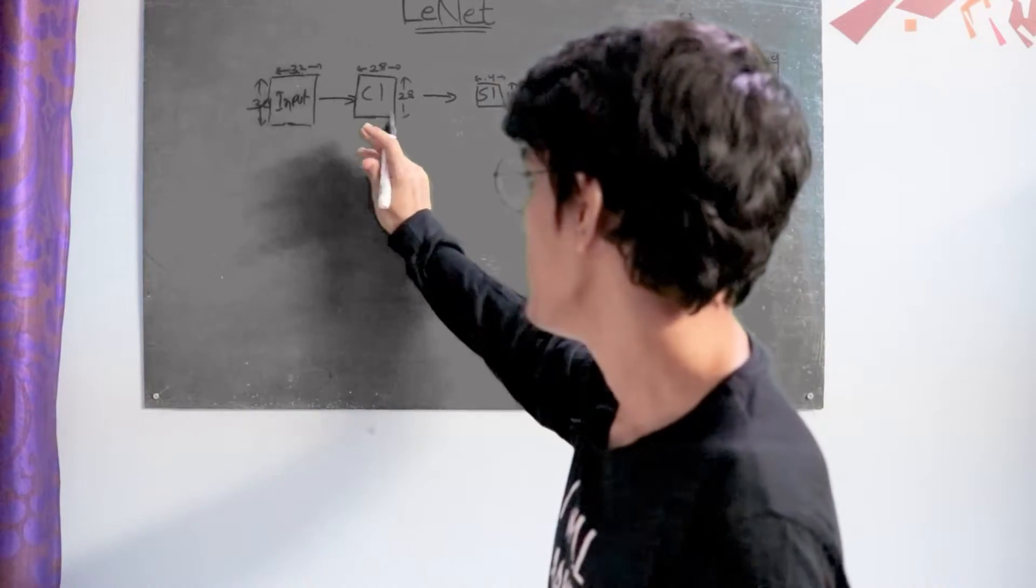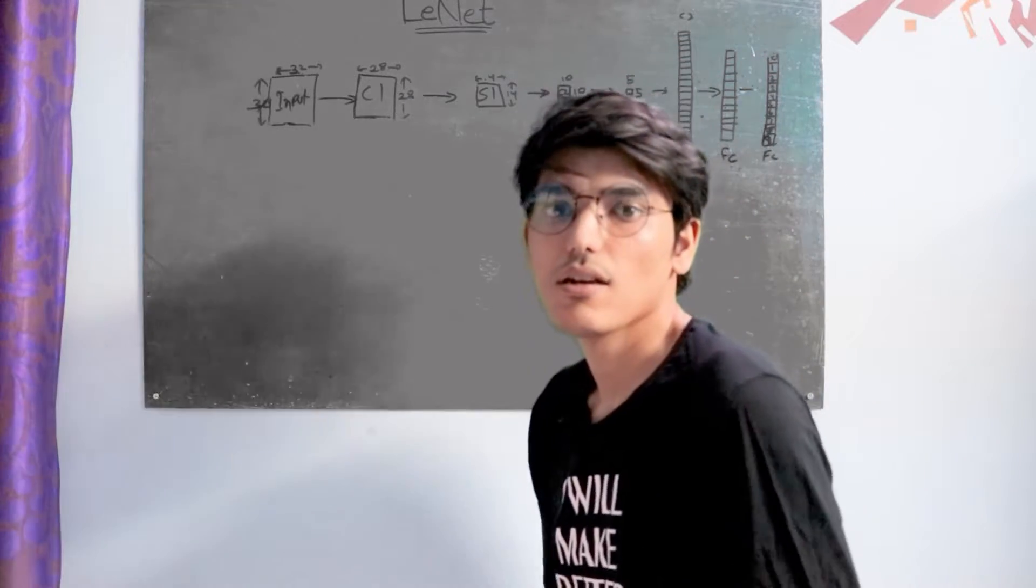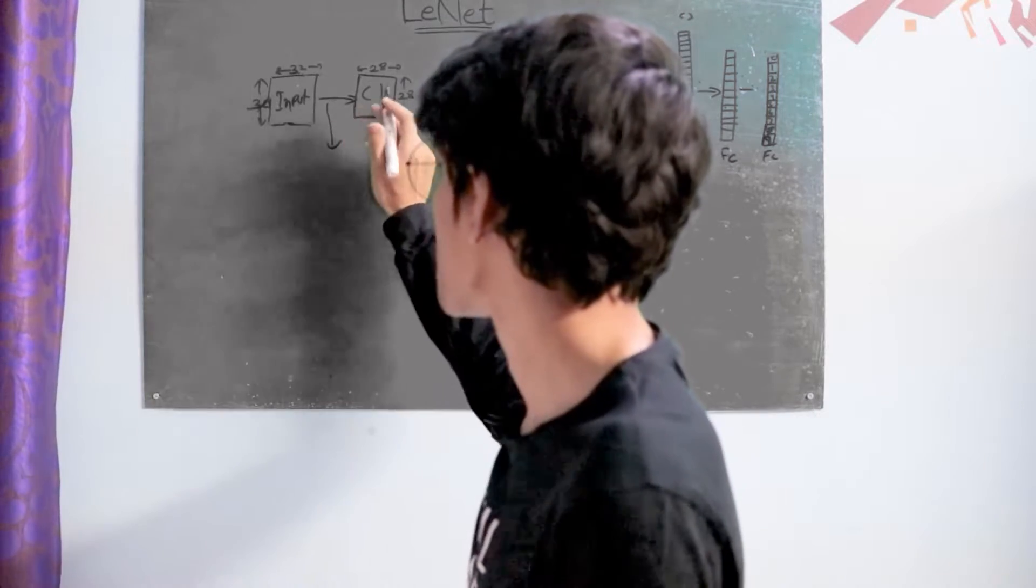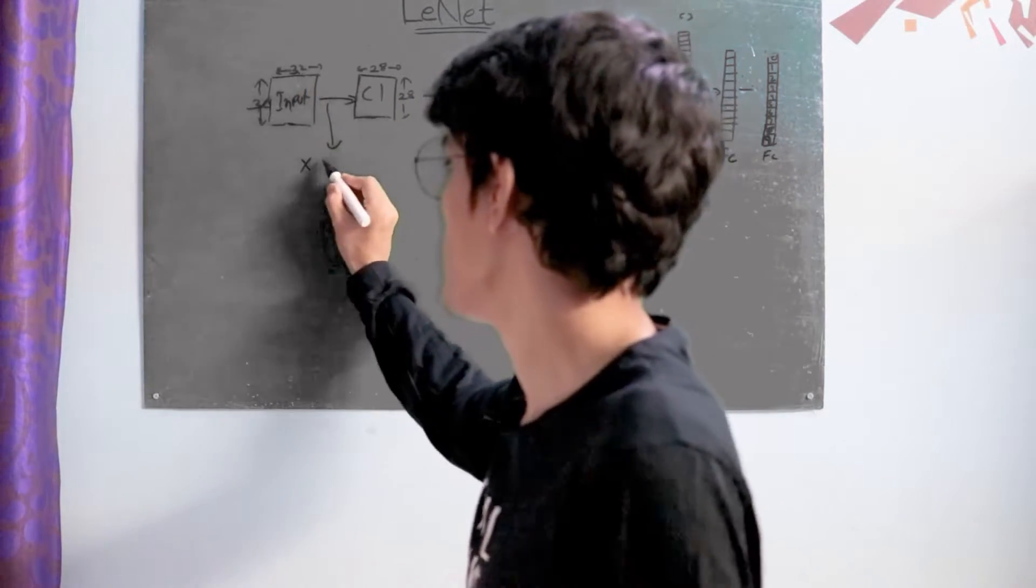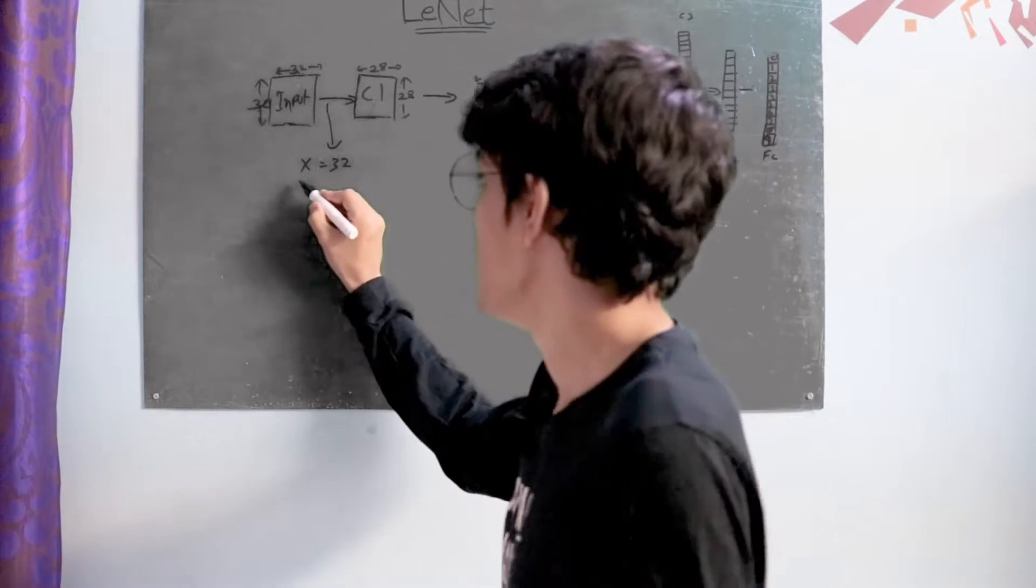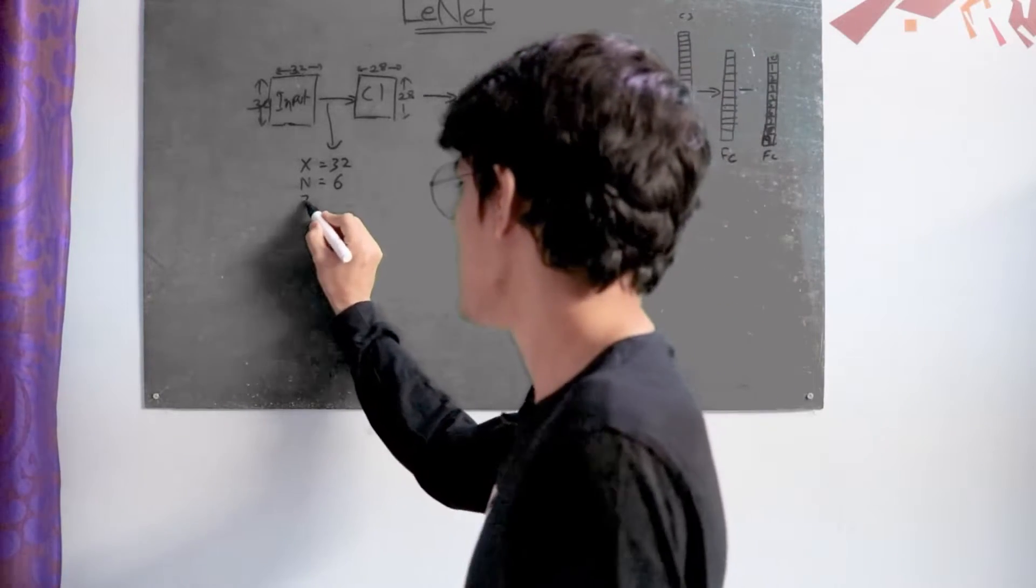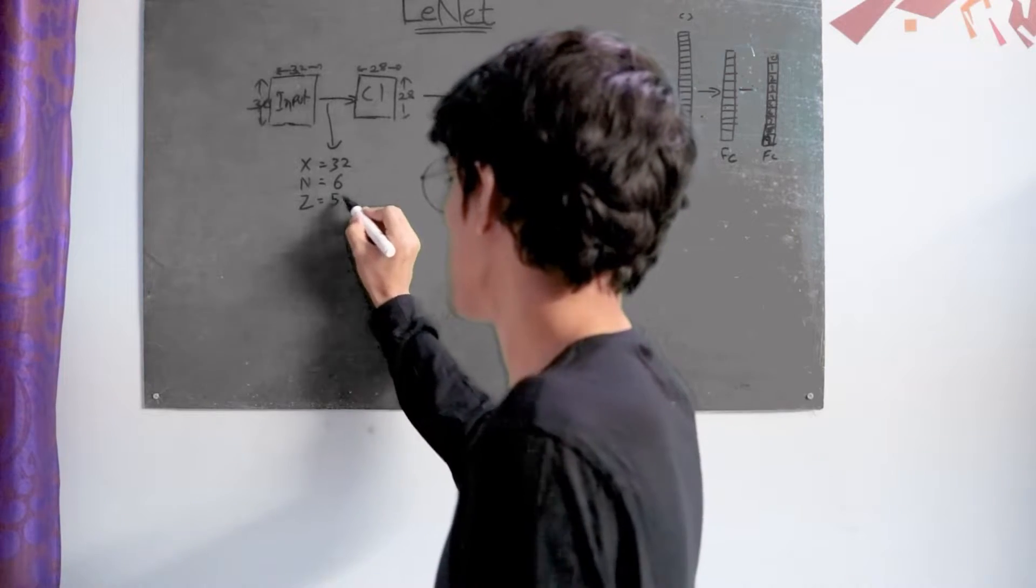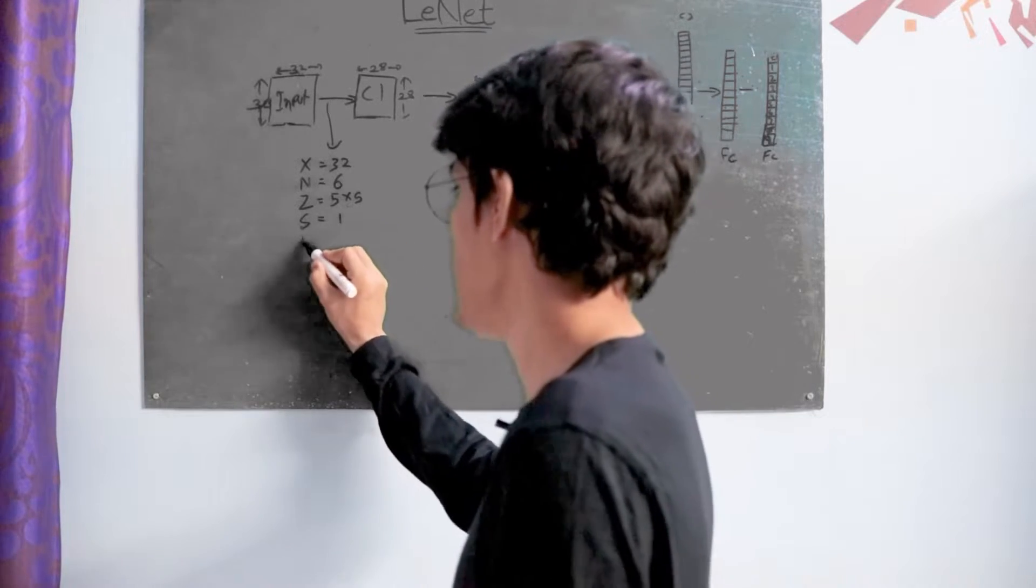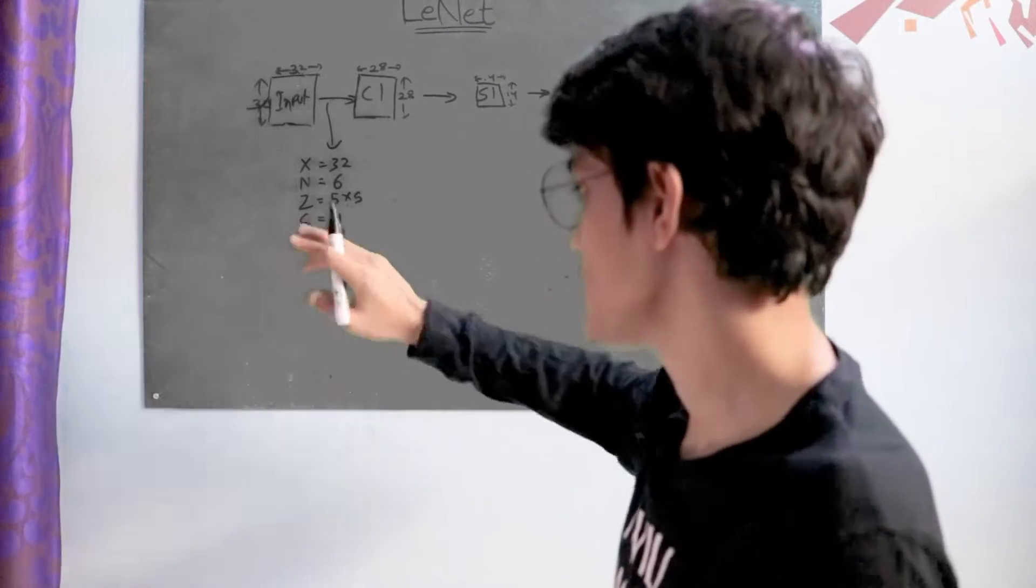Then we apply 6 convolutions of 5 x 5 kernel size to this input image. We have previous input as 32. We apply 6 convolutions with kernel size 5 x 5, stride equals 1, and padding equals 0. We don't use padding here, so we put padding as 0.